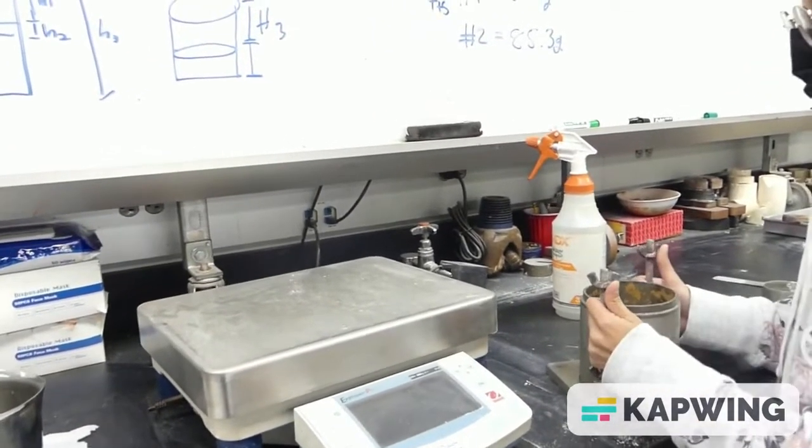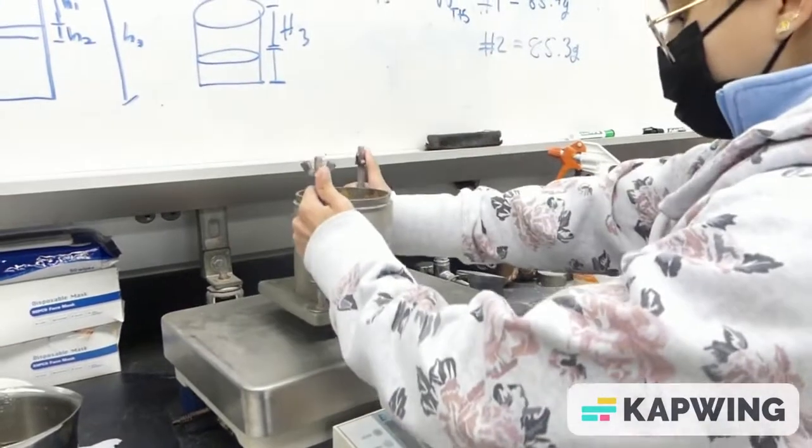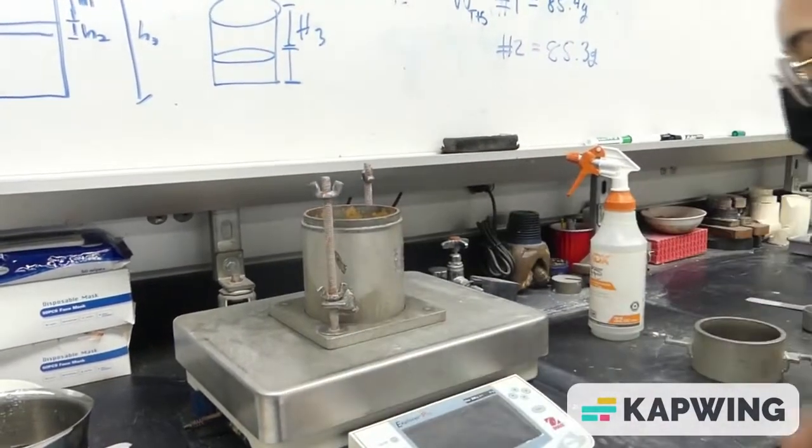To begin the compaction test, you will first need to weigh the bottom portion of the mold without the collar. Make note of this weight.